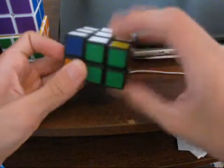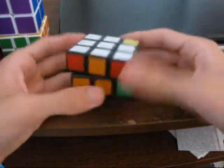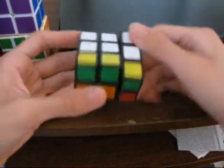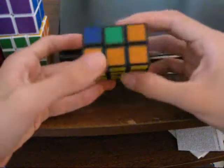and then just put it over the right spot. Do the algorithm. And then solve the rest. And that should get you one layer of the domino finished.